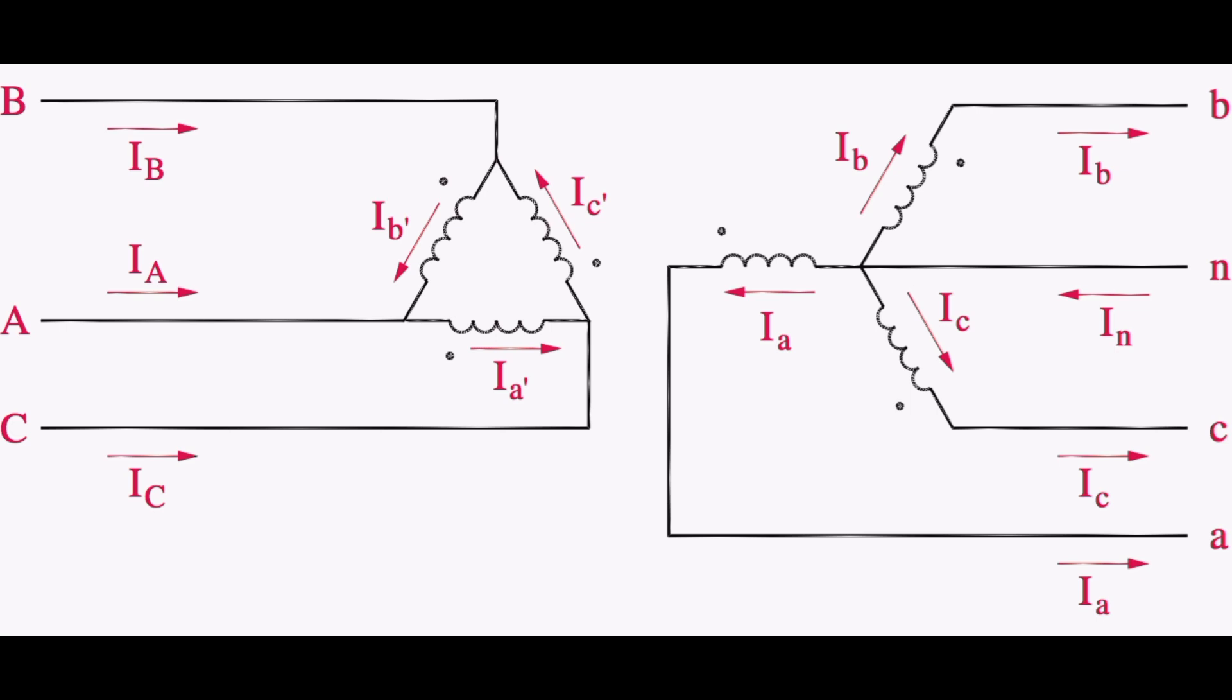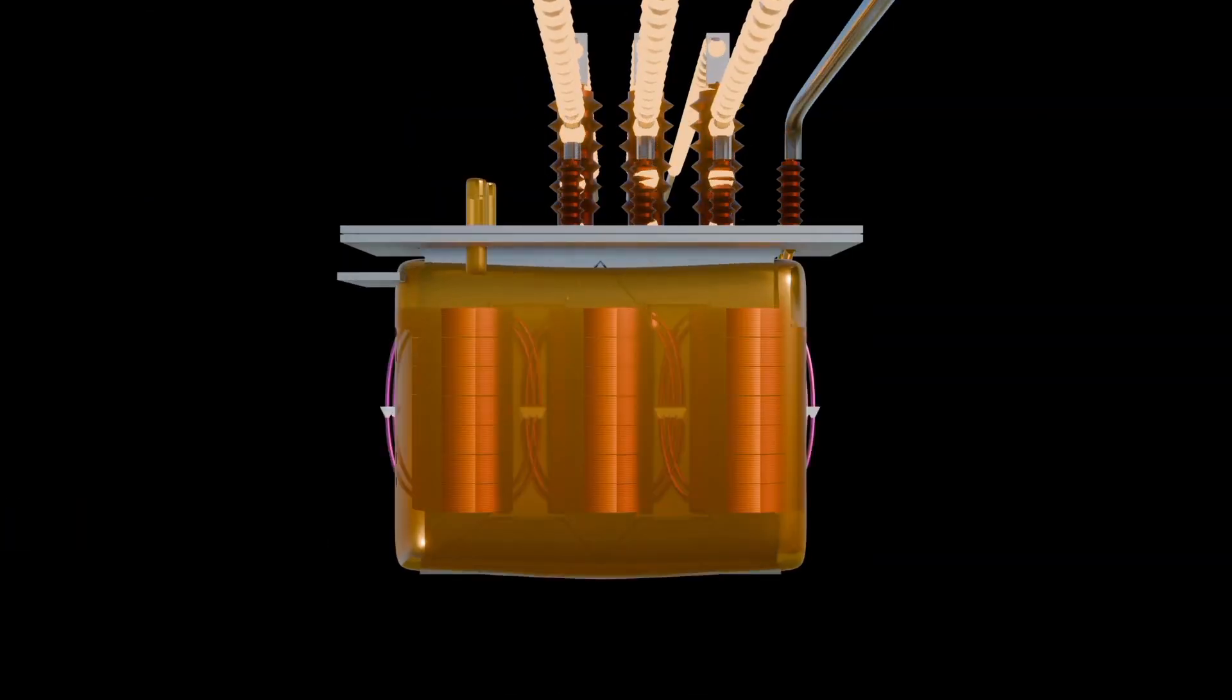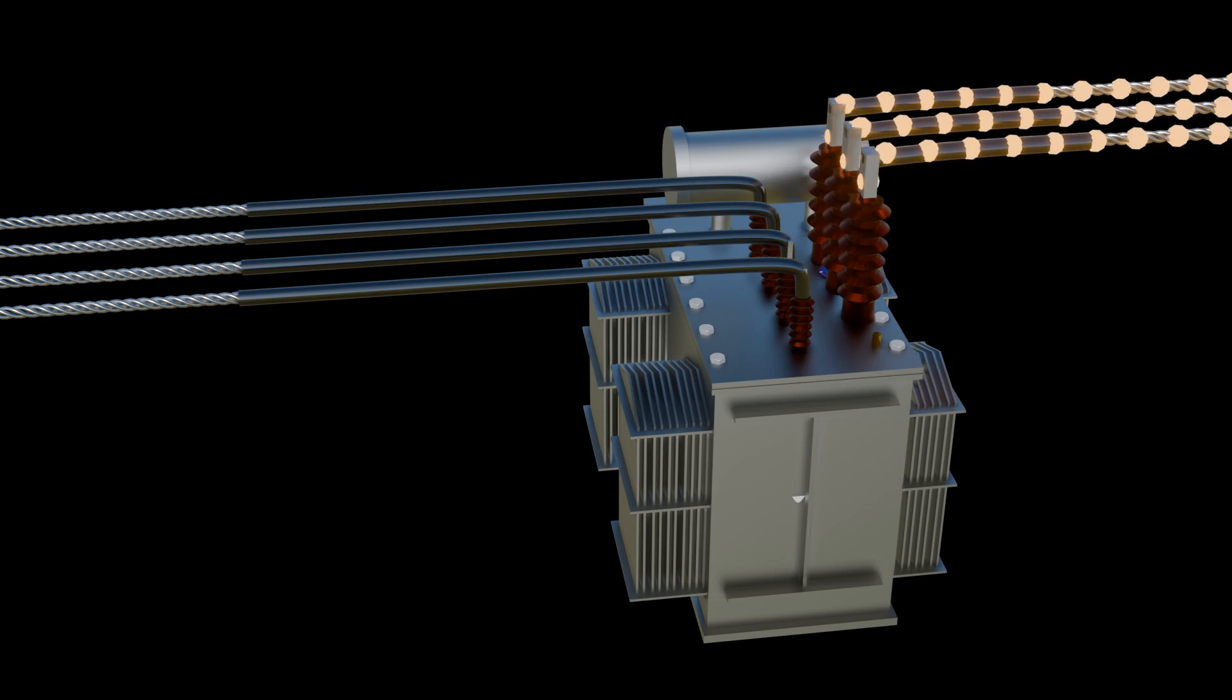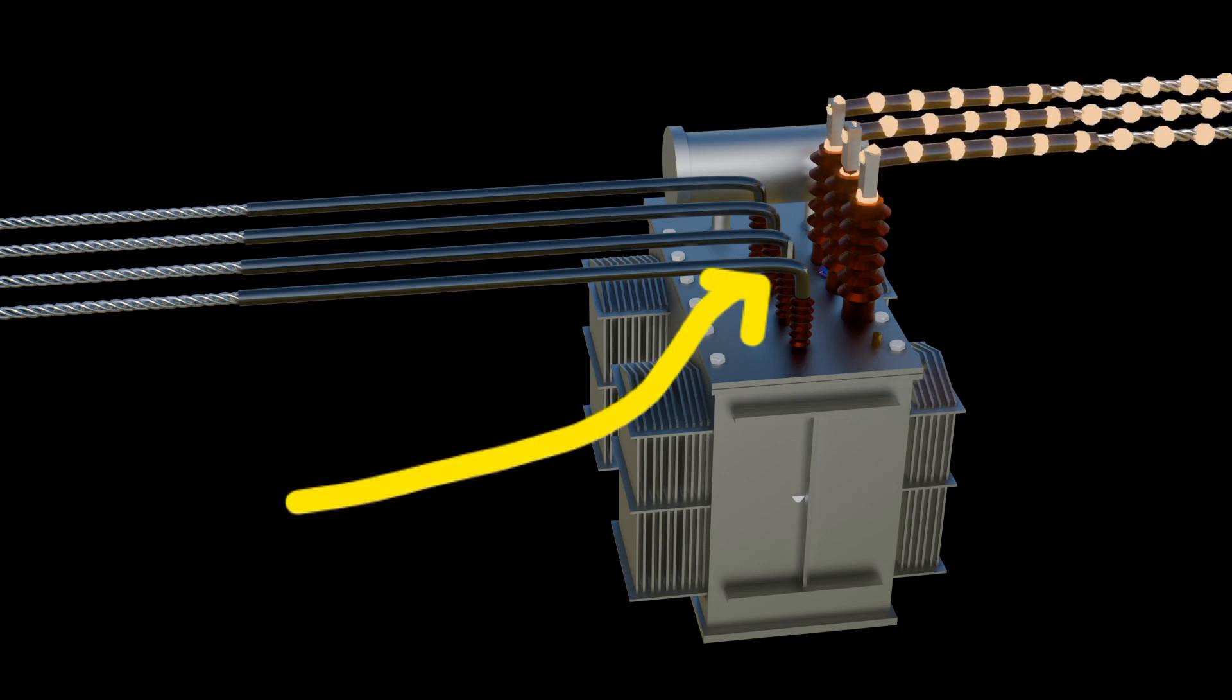Transformers suffer several losses through heat, be it eddy current losses or hysteresis losses, hence a cooling oil is used, which sometimes expands, hence the use of a tank at the top. Also bushings are used to lead current into and out of the transformer, because of their good insulation.